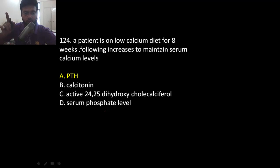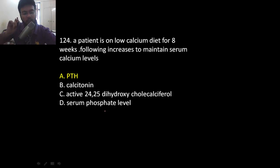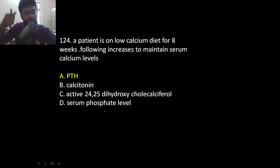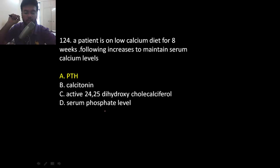The active form is 1,25-dihydroxycholecalciferol, so that option cannot be the answer. If serum phosphate level increases along with parathyroid hormone, that results in bone formation, which draws calcium out of the blood — so that also cannot increase calcium level. Therefore, the answer is parathyroid hormone.